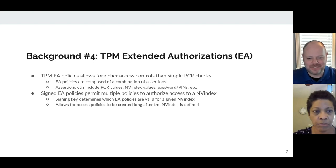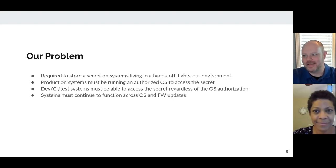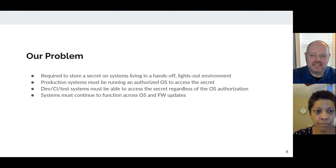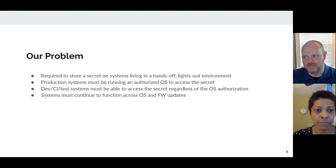Enough background — let's jump into our problem. We've got a data center environment, hands-off, lights-out, with production systems, and we want to make sure only authorized OSes and authorized kernels can actually access the secrets stored in the TPM. But we still need provisions so that development systems, CI systems, test systems, and crash-and-burn systems can access that secret regardless of OS authorization — you should be able to boot an unsigned kernel and still get access. And all of this needs to work across OS and firmware updates for long-lived systems.